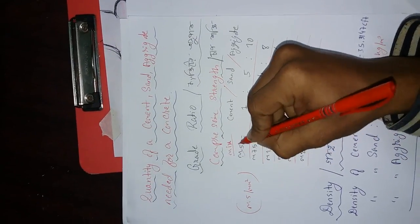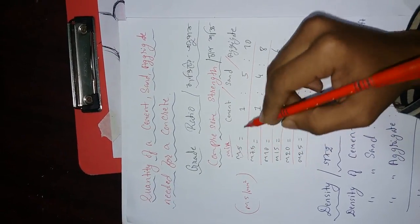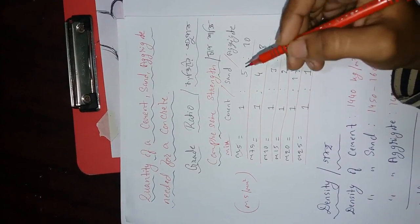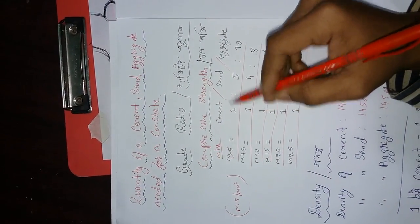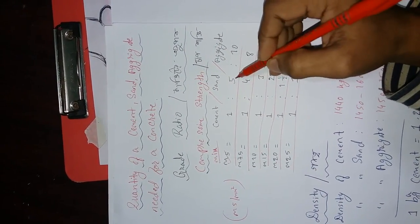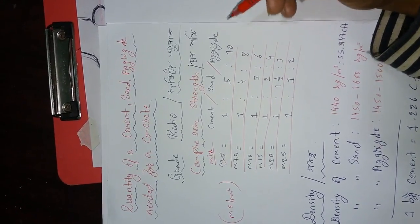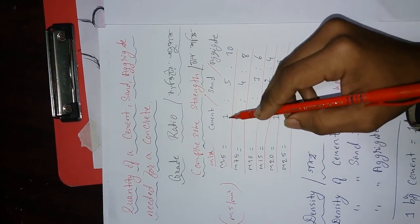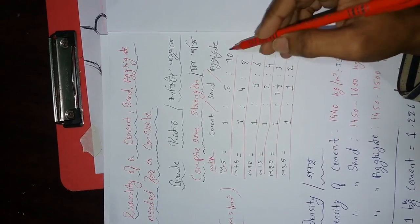We know that M is mixed. We know that M5 is concrete. The cement is 1 bag, the cement is 5 bag, the aggregate is 10 bag, the cement is 4 bag.